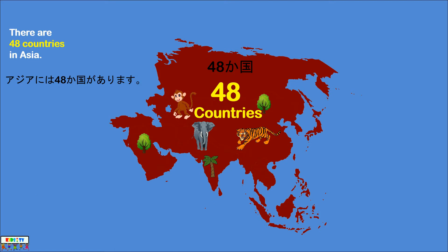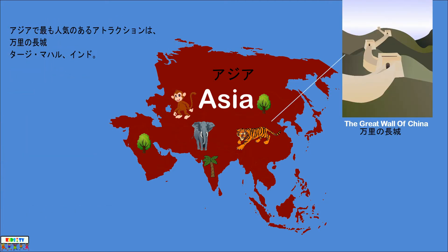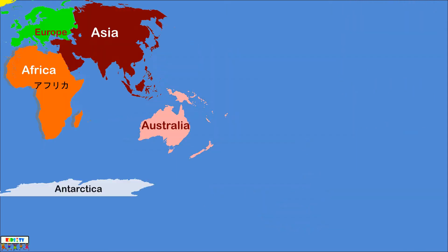There are 48 countries in Asia. Mount Everest is the world's highest mountain above sea level, located in the Himalayas mountain range in Asia. The Great Wall of China and the Taj Mahal in India are two of the most popular attractions in Asia.